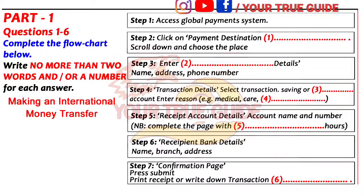That's fine. I can do it this evening. Is there much more? After the account details, you'll need to fill in the bank details of the person you're transferring money to — the name, branch and address of the bank. Anything else? No. Once you've completed everything, a confirmation page will appear. Just ensure all the information you've entered is correct and press submit. Then print off the receipt page. If you haven't got a printer at home, just make a note of your transaction reference number.